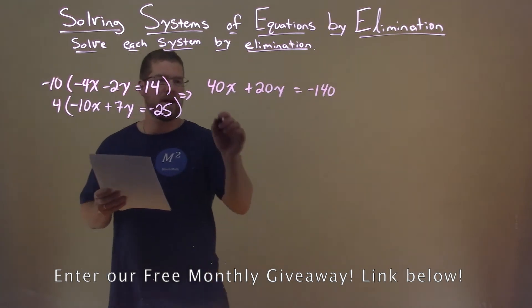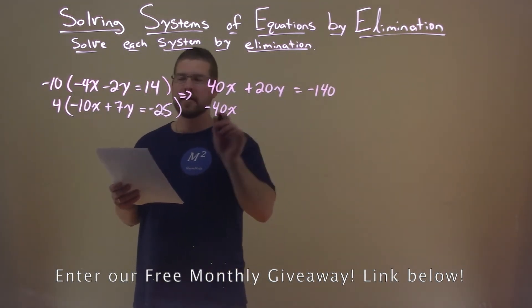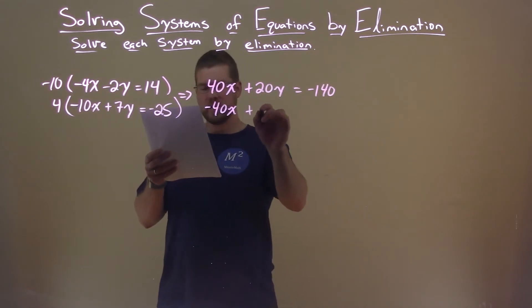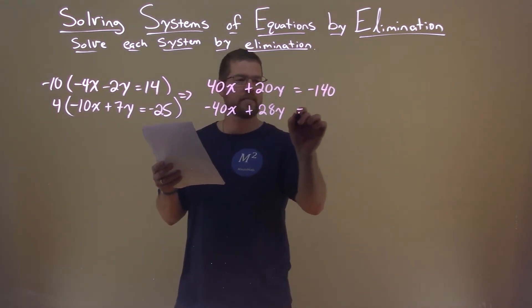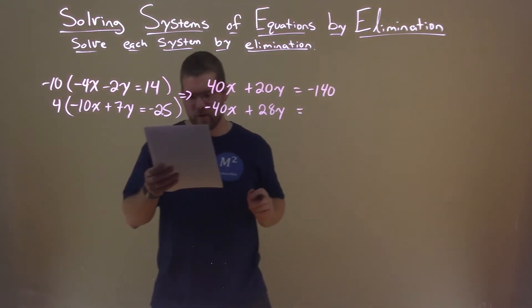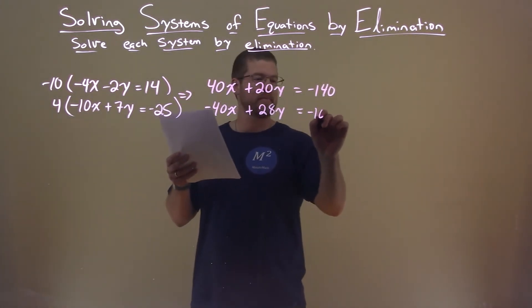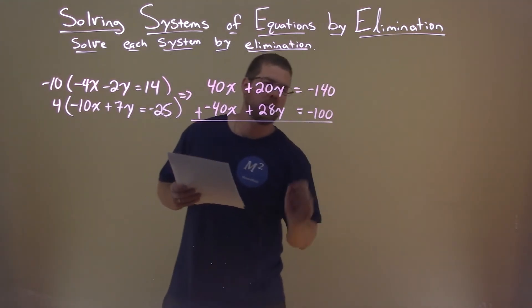4 times negative 10x is a negative 40x. 4 times 7y is a negative 28y. And 4 times a negative 25 is a negative 100. Keep it 100, everybody.